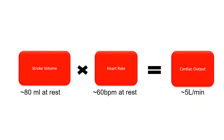So what is cardiac output? Cardiac output is essentially the total volume of blood pumped by the ventricle per minute. To get this value, we multiply stroke volume — the total amount of blood pumped per beat — by heart rate, the number of beats per minute. For an average person at rest, we might expect about 80 milliliters per beat at a resting heart rate of around 60 beats per minute, giving an average cardiac output of four to five liters per minute.